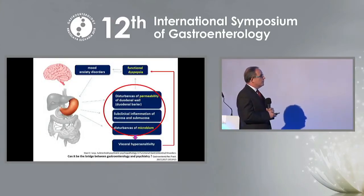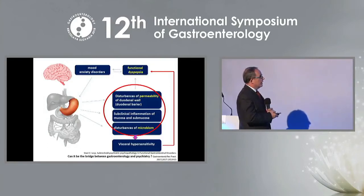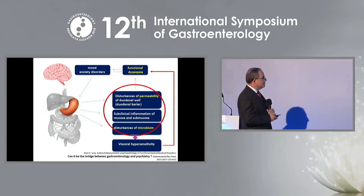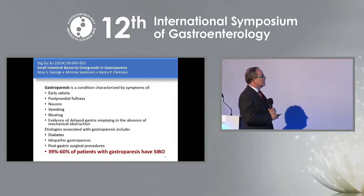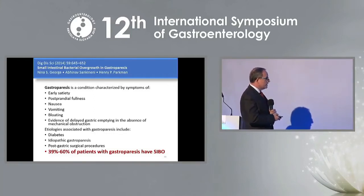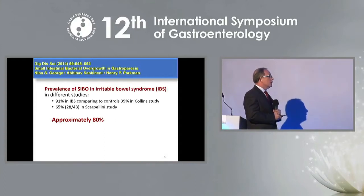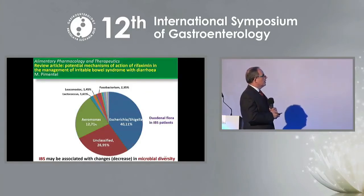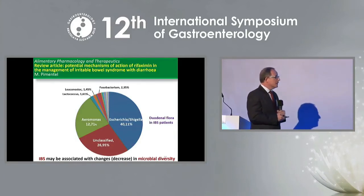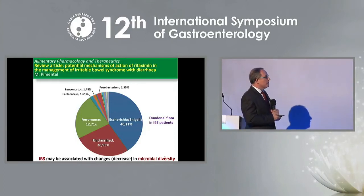Disturbances of permeability of the intestinal wall can cause functional dyspepsia, while disturbances of microbiota lead to visceral hypersensitivity. Gastroparesis is not as common as dyspepsia, but about 40 to 60 percent of patients with gastroparesis have SIBO. Prevalence of SIBO in IBS patients is approximately 80 percent. IBS may be associated with decreased microbial diversity. Here we can see duodenal flora in IBS patients and, for comparison, duodenal flora in healthy subjects, which is more diversified.